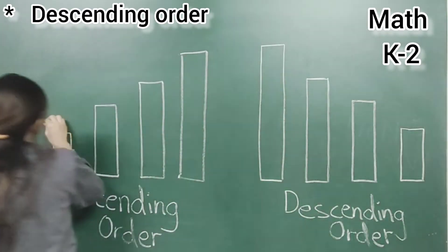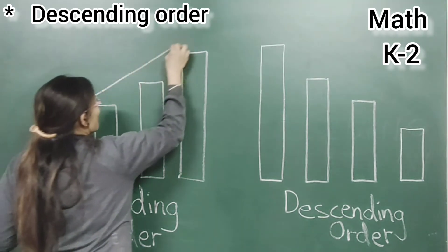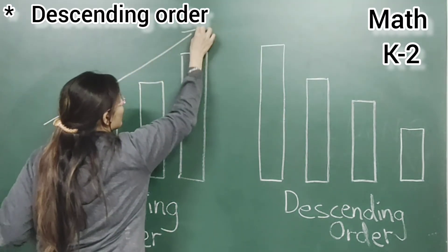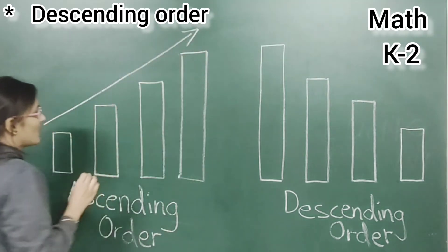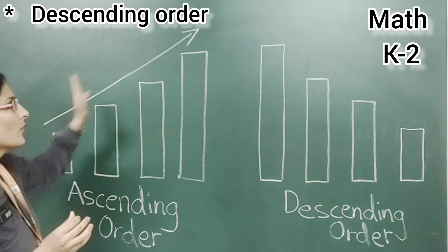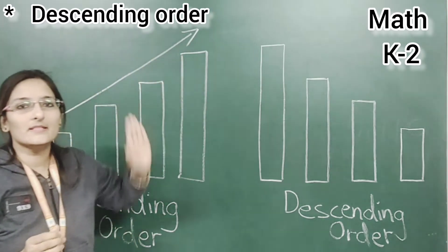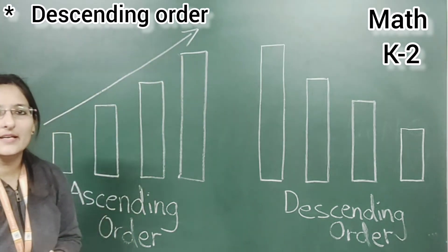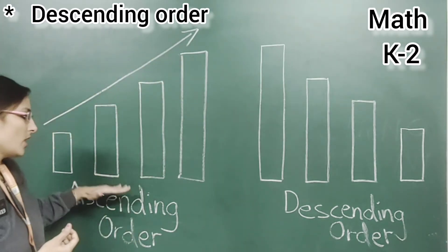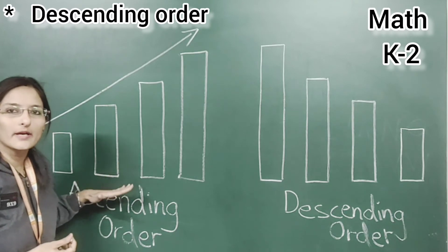You are able to see the graphs? Now we will come to know the difference between them. In ascending order, you can see the graph is going up, up, up. We are starting from the small and going to the biggest. This is called ascending order.